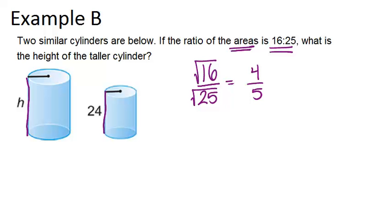So we can set up a proportional equation that the ratio of 24 to h, which is the smaller height to the bigger height, must equal 4 over 5. And then we can solve this for h by cross-multiplying.